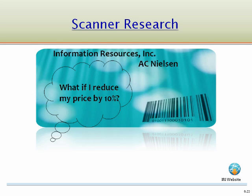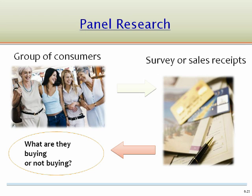Scanner research is a type of quantitative research that uses data obtained from scanner readings of UPC codes at checkout counters. For example, a firm could determine what would happen to sales if they reduced their price by 10% in a given month — did it increase, decrease, or stay the same? Panel research is a type of quantitative research that involves collecting information from a group of consumers over time. The data collected from panelists may be from a survey or a record of purchases, providing consumer packaged goods firms with a comprehensive picture of what individual consumers are buying or not buying.